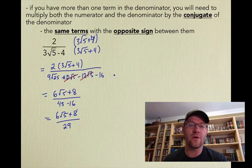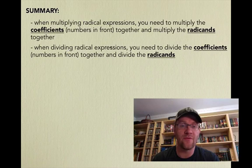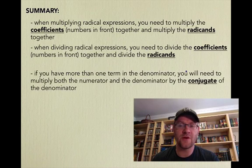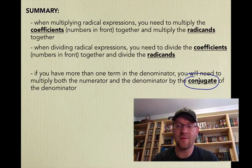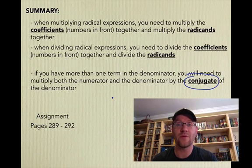In summary: when multiplying radical expressions, multiply the coefficients and radicands together. When dividing, divide the coefficients and radicands. If there's more than one term in the denominator, multiply numerator and denominator by the conjugate — the same two terms with opposite signs. Your assignment is on pages 289 to 292. Good luck and we'll see you in class.